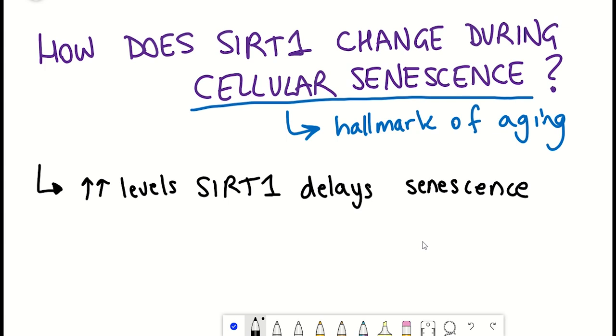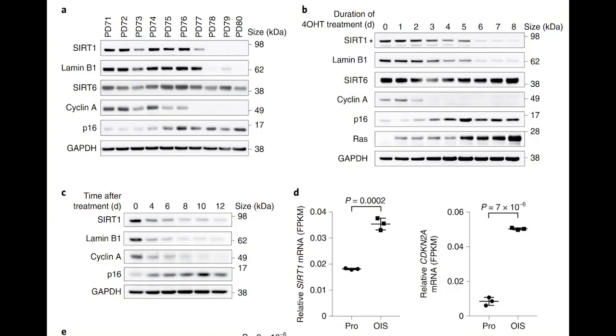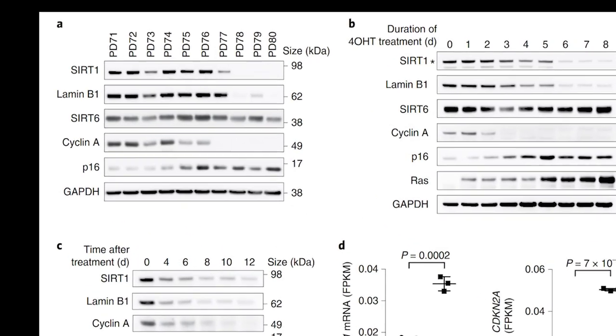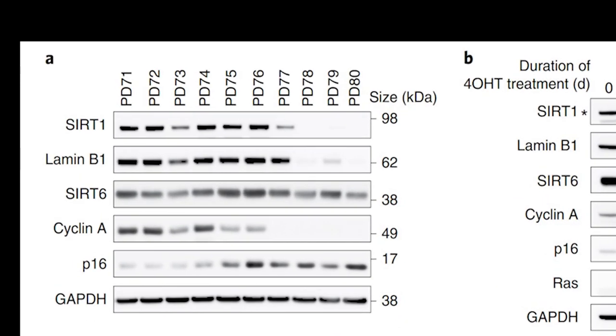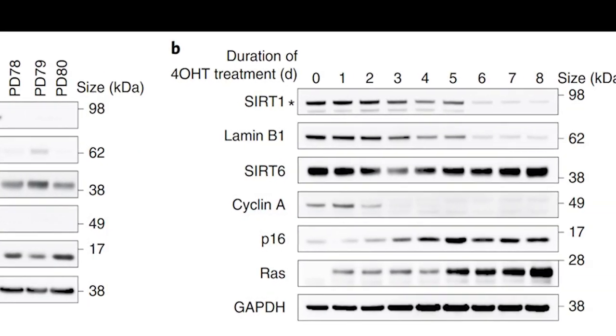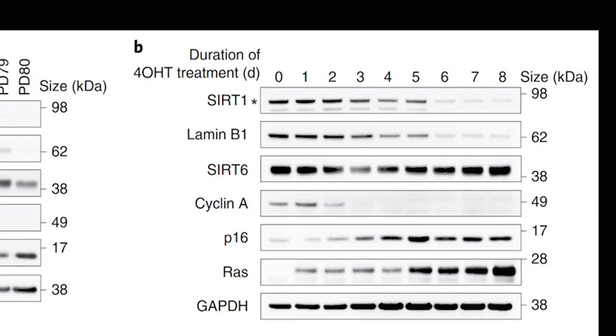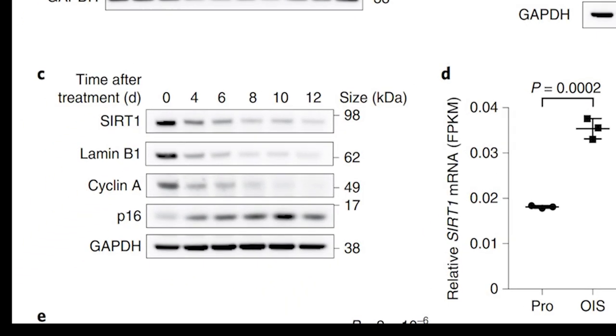So what actually happens to SIRT1 in a senescent cell? If we take a look at this first figure, which can only be described as a beautiful set of Western blots, they are very nice, we can see that in different types of senescence induction, there's a decline in SIRT1 protein level. This can be seen in terms of population doubling, so continual passaging of a cell line until it stops growing. As you can see, the SIRT1 levels decline during this time period. We can also see it decline in oncogene-induced senescence and in DNA damage-induced senescence.